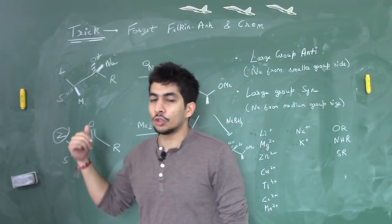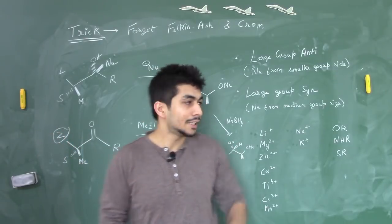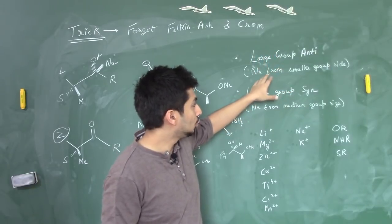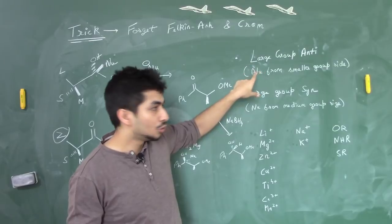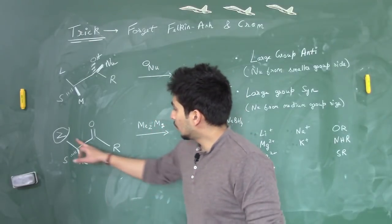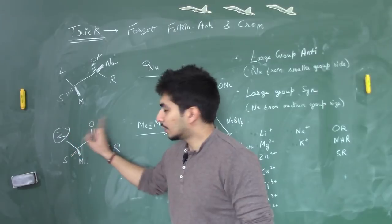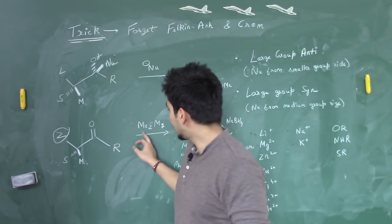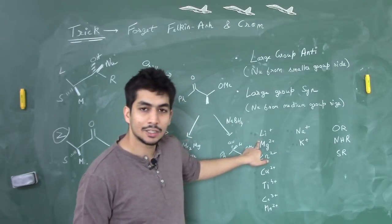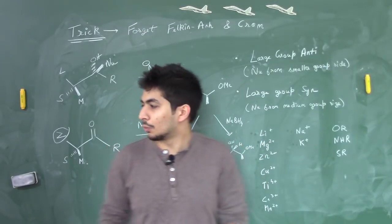In chelation, the table reverses: if the Z group is anti, the nucleophile attacks from the medium group side — opposite to the normal case. For example, in this case, the Z group is syn to the ketone. We are adding MeMgX, and since magnesium is a chelating metal, chelation takes place. Most metals chelate — only sodium and potassium do not.